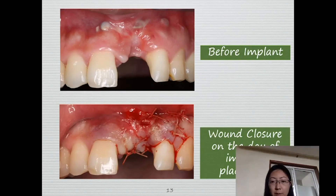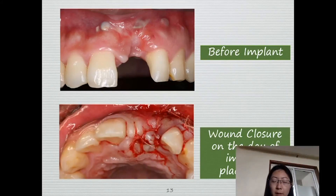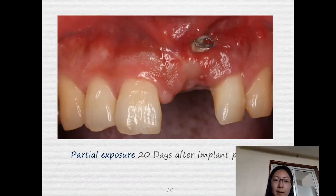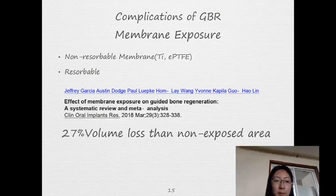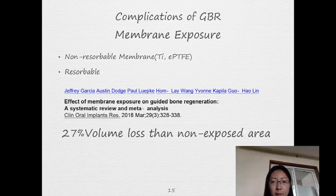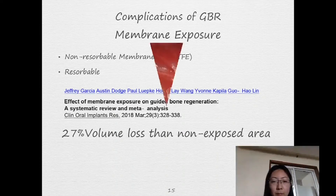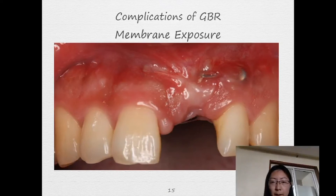This is before implant placement, and this is wound closure on the day of implant placement. Unfortunately, after 20 days of implant placement, we can see partial exposure of the micro titanium plate. From the systematic review, we know that 27% of volume will be lost compared to a non-exposed area. But for this case, if we do another surgery, it will do harm to the implant and bone. So I just sterilized the area, used chlorhexidine, and let the patient build up daily oral hygiene.